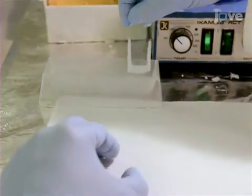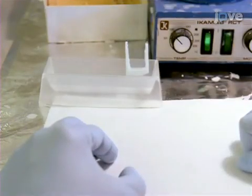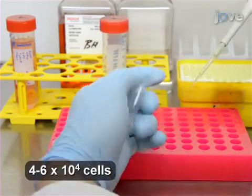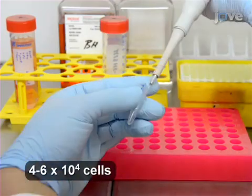Then place the migration chambers in an upright position in a rack. To 1.5 milliliter reaction tubes, add 20 microliters of the cell suspension.